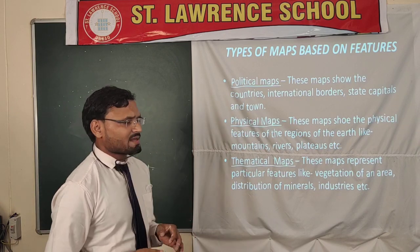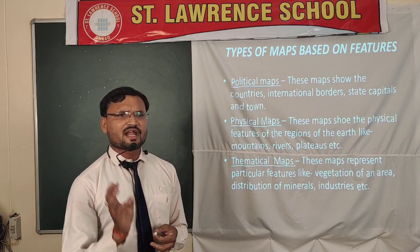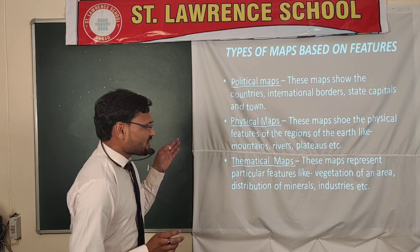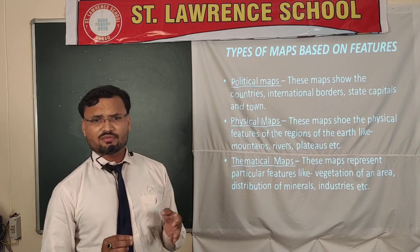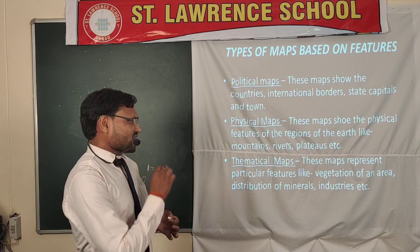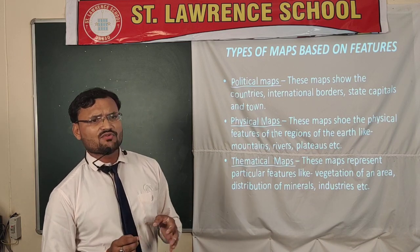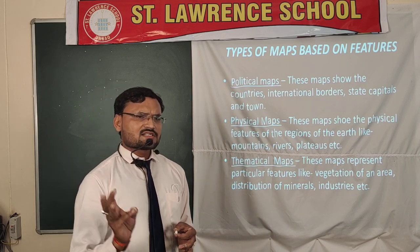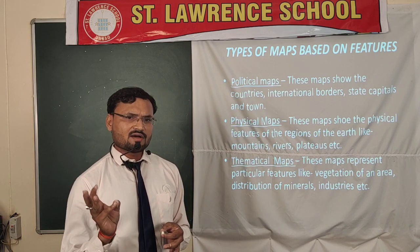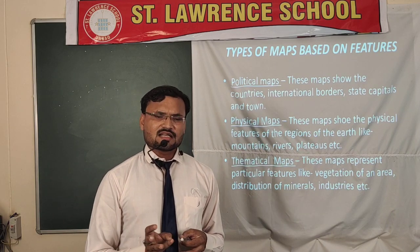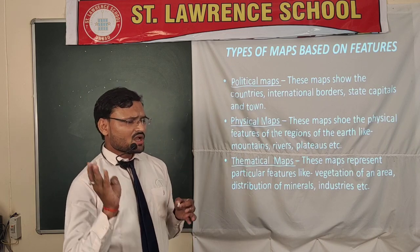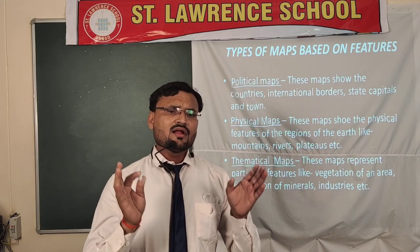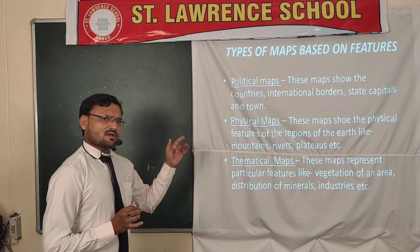The third type is the thematic map. If we want to represent any particular feature of an area — like the population, vegetation, or industries of a region — we prepare a thematic map. For example, we can represent textile industries, silk industries, mineral industries, and iron and steel industries all together on one thematic map.